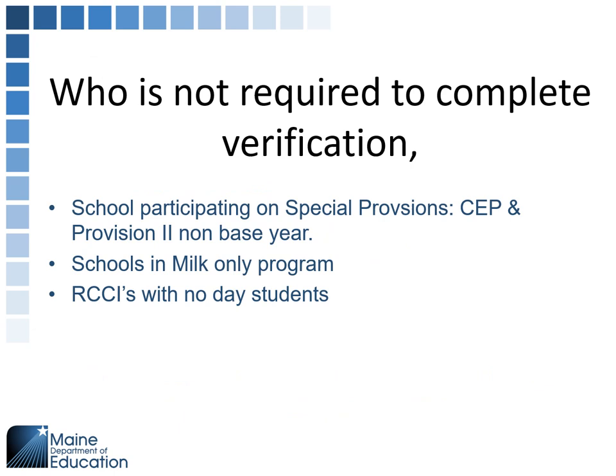Who is not required to complete the verification process? Schools participating in special provisions — either CEP, Community Eligibility Provision, or if they're in Special Provision 2 and not in the base year. Remember, Special Provision 2 with the base year does collect applications. Any time you are collecting applications, you will complete the verification process. Schools in a milk-only program are also not required.